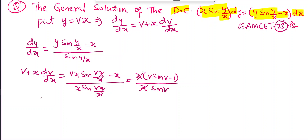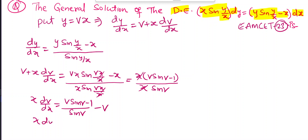So x·dv/dx = -1/sin v. Separating variables: -sin v dv = dx/x. Taking integration: cos v = log x + log C = log(Cx).